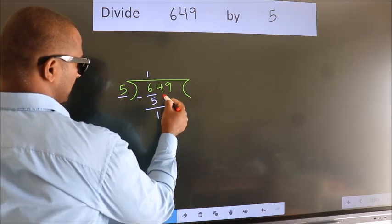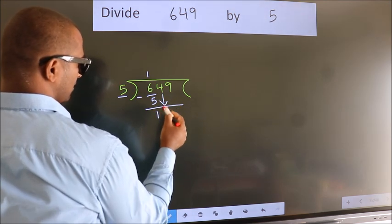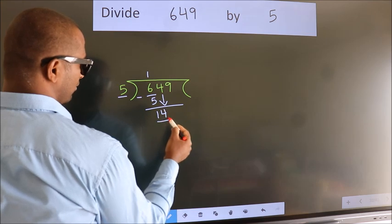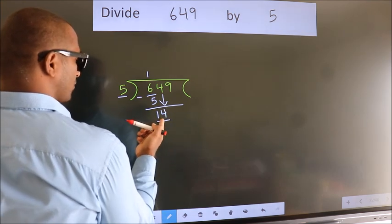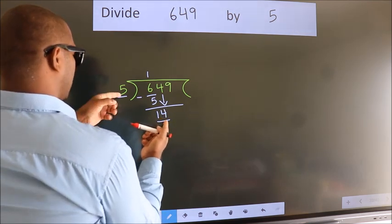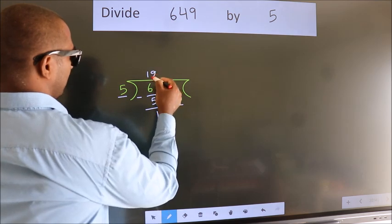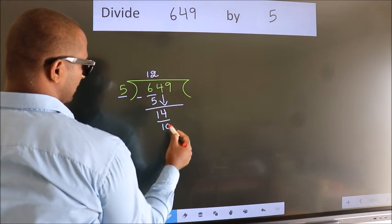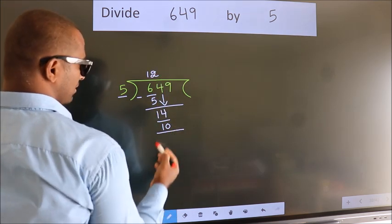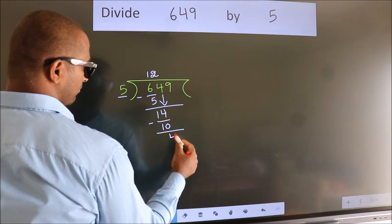After this, bring down the beside number. So, 4 down. So, 14. A number close to 14 in the 5 table is 5 twos 10. Now we subtract. We get 4.